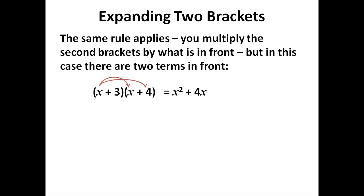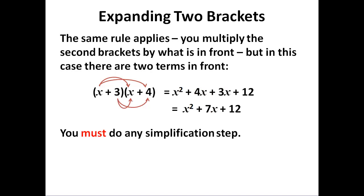First one, second one, third one, fourth one. Everything in the front is multiplied by everything in the back. Then we notice we have like terms in the middle, so we can group them. We must do that simplification.